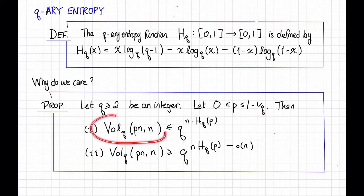First, the volume of the q-ary Hamming ball of radius pn in F_q^n is bounded above by q^(n·H_q(p)). Second, the volume of that Hamming ball is bounded below by that same expression except with a little o(n) term in the exponent.